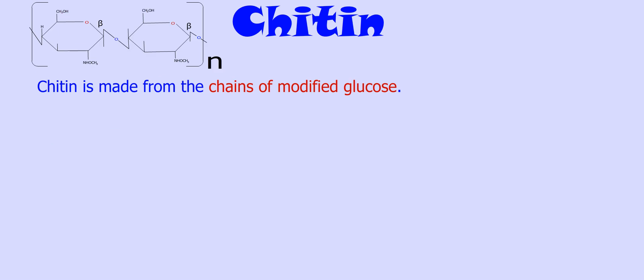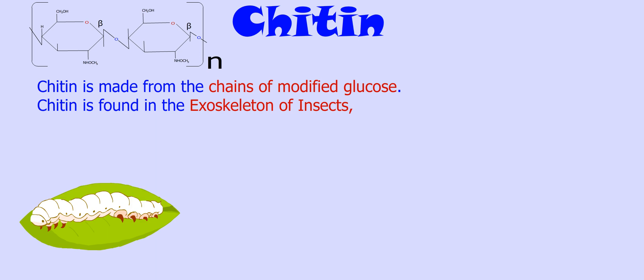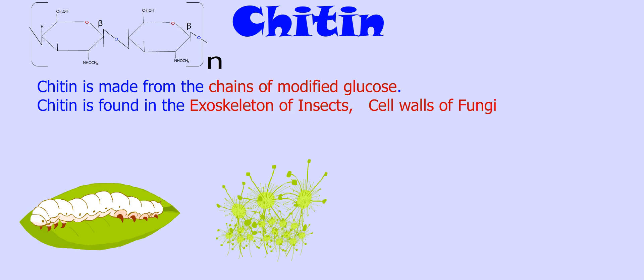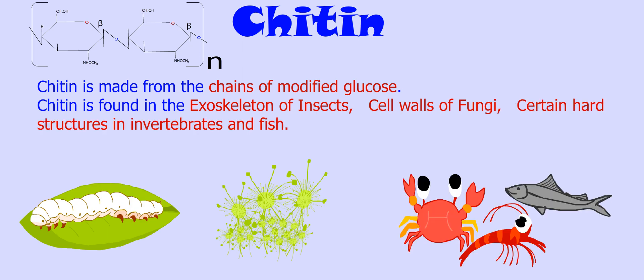Chitin is made from chains of modified glucose. Chitin is found in the exoskeletons of insects, the cell walls of fungi, and certain heart structures in invertebrates and fish.